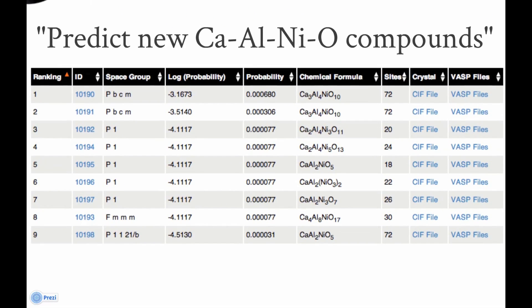The predictor returns a list of potential compositions and crystal structures that might exist. The predictions near the top are more likely to exist than the ones near the bottom.